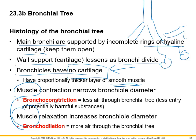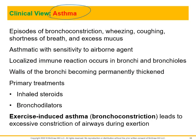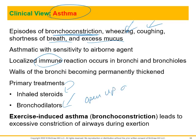With muscle in the bronchioles, you can have constriction or dilation — similar to the smooth muscle of the cardiovascular system. Bronchoconstriction means less air is moving through the bronchial tree; bronchial dilation means more air moving through. Think about asthma — extreme bronchial constriction causing wheezing, coughing, shortness of breath, and excess mucus. It can be an immune response. Treatments include inhaled steroids or bronchial dilators — we're trying to open up the airway. If you don't open the airway, you don't have enough oxygen, you can't make enough ATP — not good for your brain or muscles.